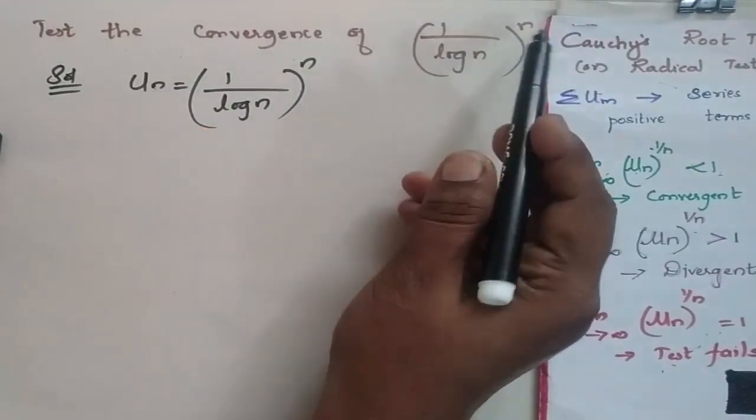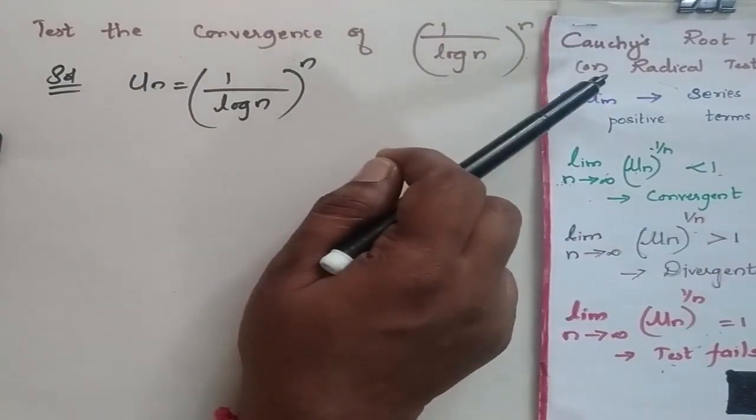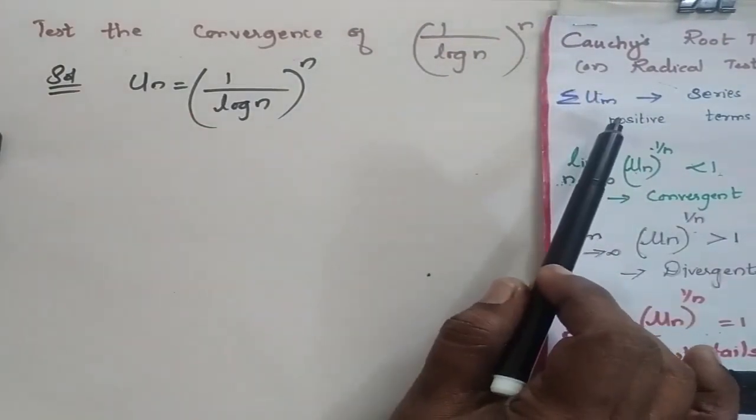It is the convergence of 1 by log n to the power n. We are going to test the convergence by Cauchy root test or radical test where you have a series of positive terms u_n.